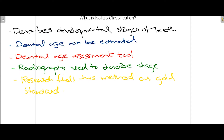Most of the time we use radiographs to describe Nolla's classification because radiographically we can see the initial crypt formed in the mandible or maxilla, then as calcification begins the root and crown start to form. Research has concluded that Nolla's classification is the gold standard used most often to determine the dental age of the patient.